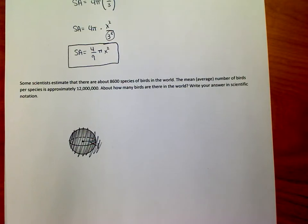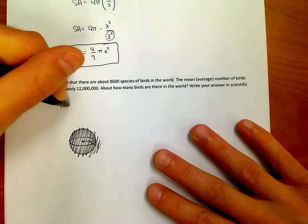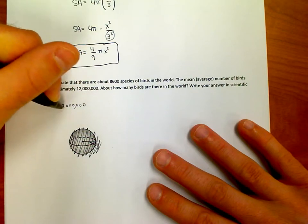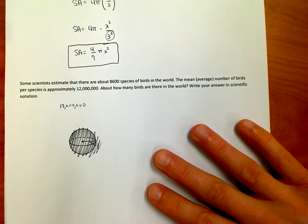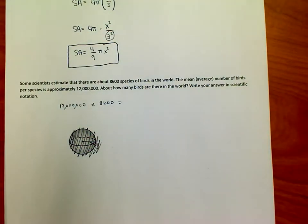And can we write our answer in scientific notation? So, if each species has 12 million birds, and if there are 8,600 types of birds, we're just going to multiply those two numbers together. And so, that's a fairly straightforward problem. The question is, then, can you take that and can you write your answer in scientific notation?